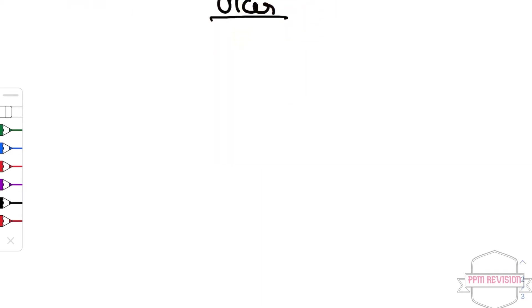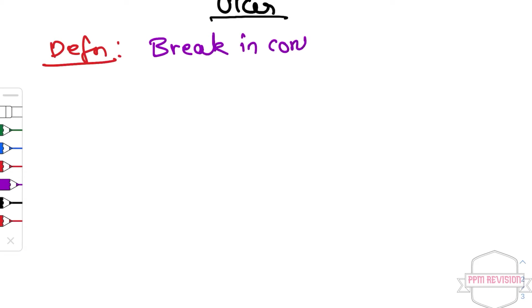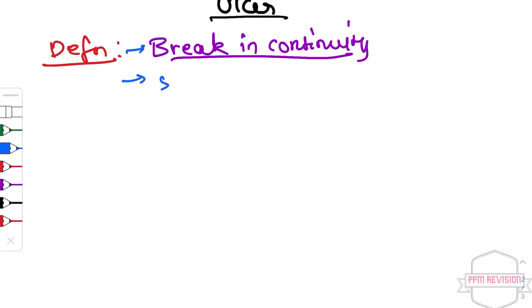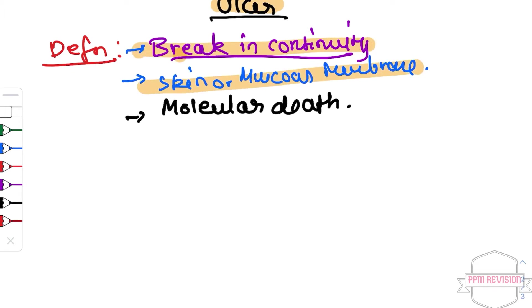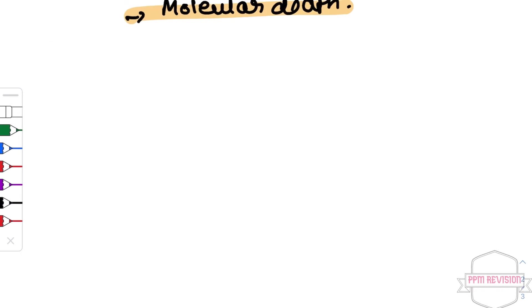Welcome back. Now we'll be looking at the topic of ulcer. Under ulcer, firstly we'll look at the definition. An ulcer is defined as a break in continuity of the skin or the mucous membrane, and this can be caused due to molecular death.